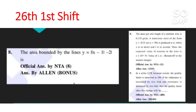Continuing with 26th first shift — total eight error questions. For three more of them: the first will give bonus marks to all students. For the second, NTA's answer is printed as 12 but the correct answer is 15 — it appears to be a printing mistake where 12 was printed instead of 15. If you claim it, you will get the marks.